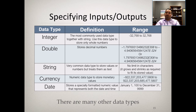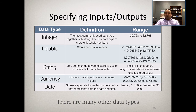We use the string data type for variables whose values are text — for example, a variable called 'color' with values like blue, yellow, or black must be declared as string. Currency is used for prices and can be used interchangeably with double, but currency automatically formats values with a dollar sign. We also have the date data type.